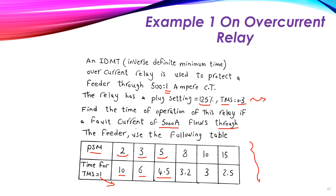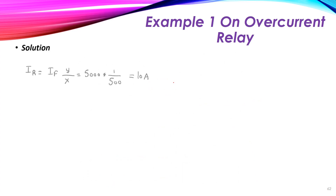We have a fault current of 5000 amperes. This fault current is first seen by the CT, which steps it down from 5000 to a certain value. The current flowing through the relay equals the fault current multiplied by the CT ratio: 5000 multiplied by (1/500) equals 10 amperes. So the fault current at the relay side is 10 amperes.